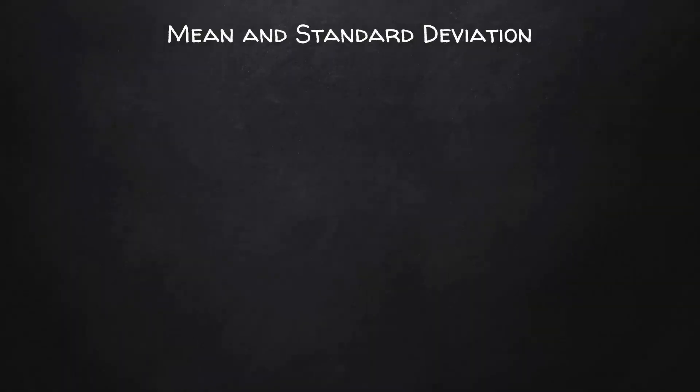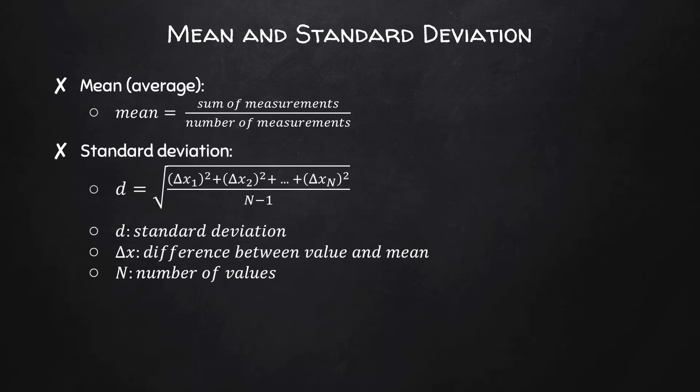When we have many trials of the same measurement, it will be important for us to calculate the mean and the standard deviation of those measurements. Mean is average, which is the sum of the measurements divided by the number of measurements. Standard deviation is more complicated. Here's the equation for it.